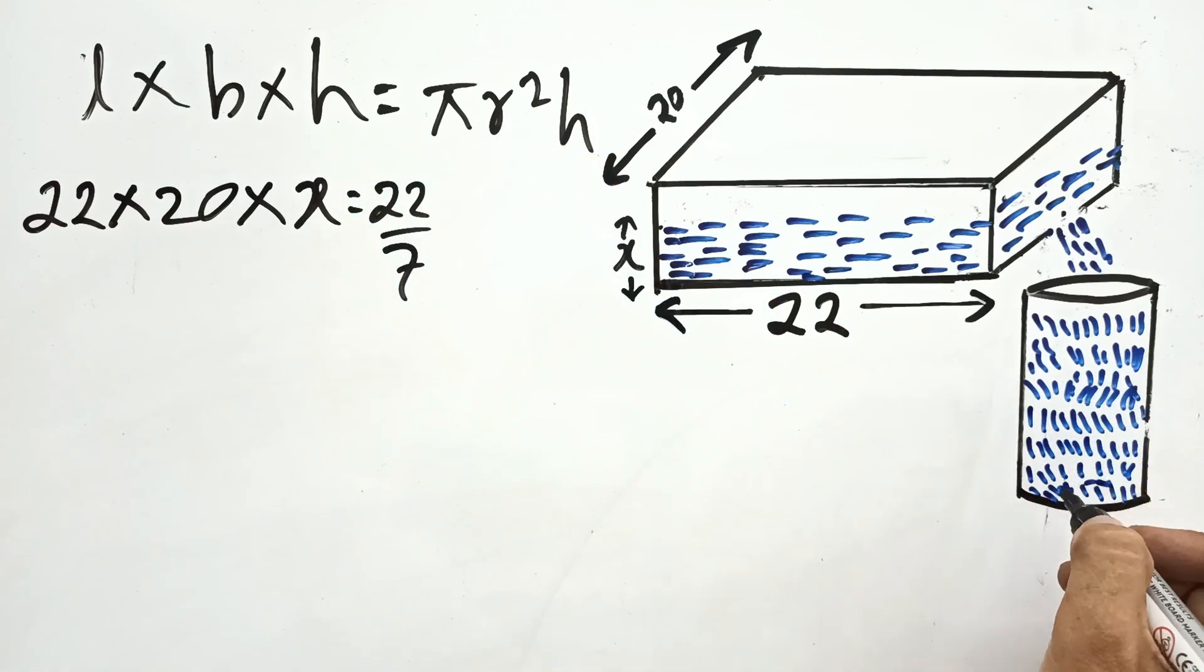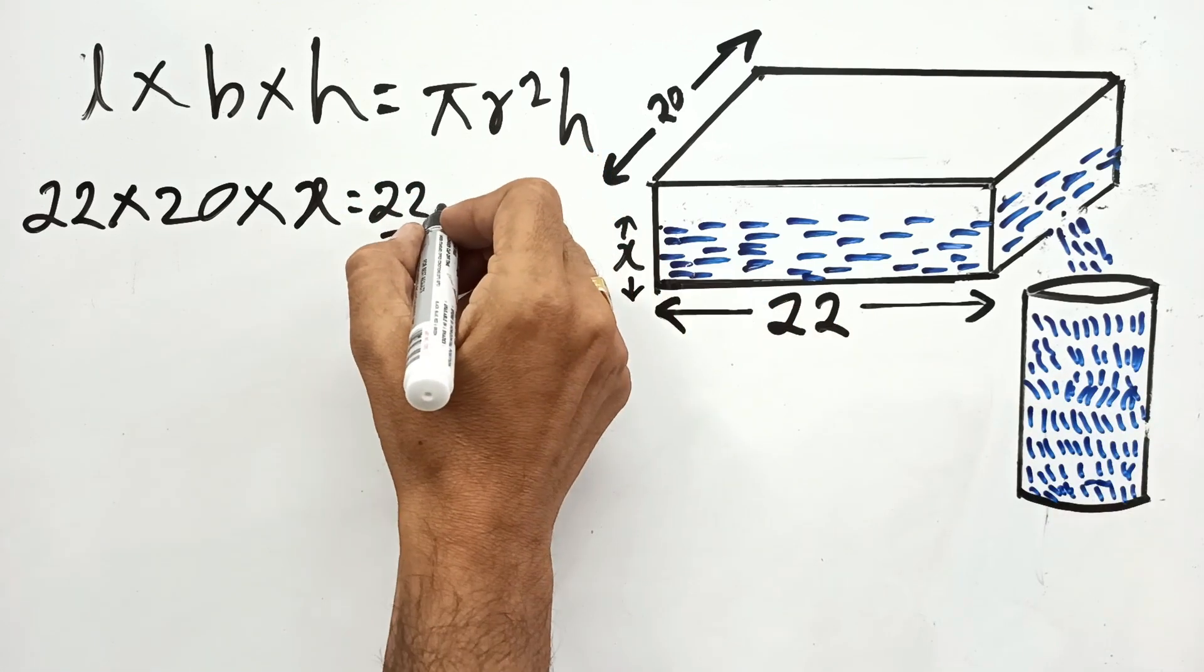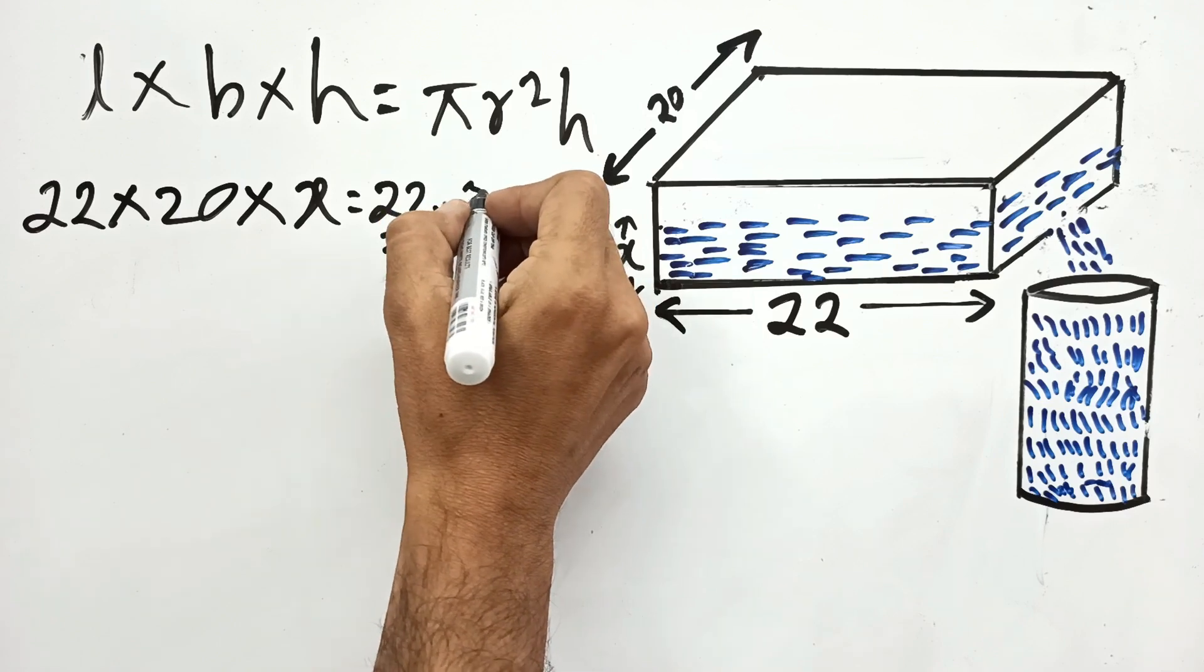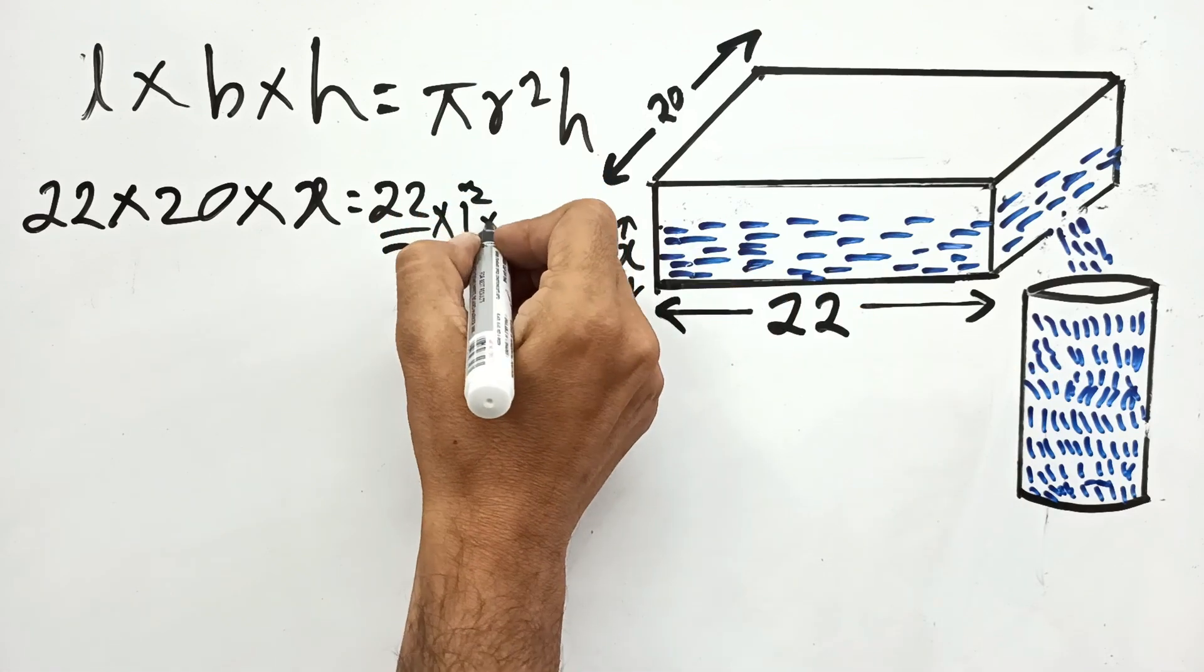The diameter is 2 so radius will be 1, and height is 3.5.